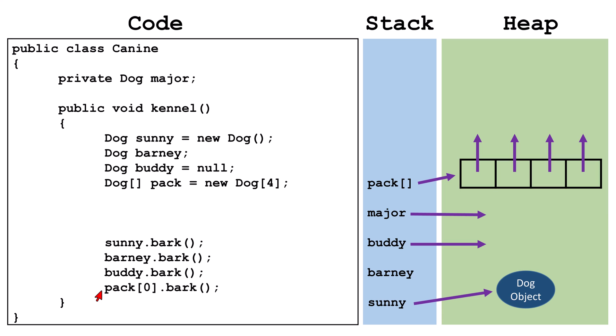If we wrote pack index 0 dot bark, the JVM will follow the pack pointer to the array object. It will look inside index 0 and follow that pointer looking for a dog object. Not finding an object will cause a null pointer exception and crash. To fix this, we could individually set each index to point at a new dog object. Now, this line of code will run without error.